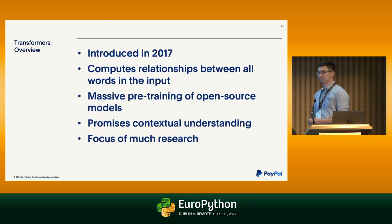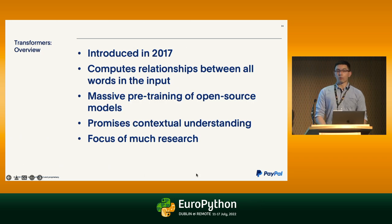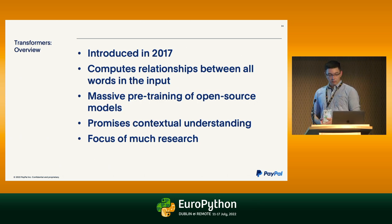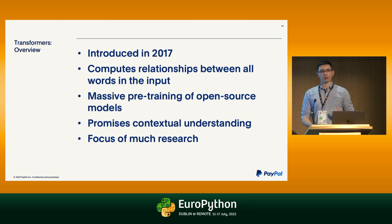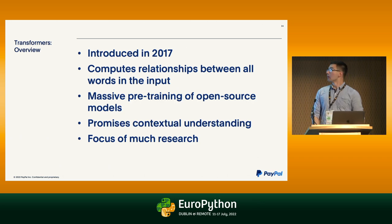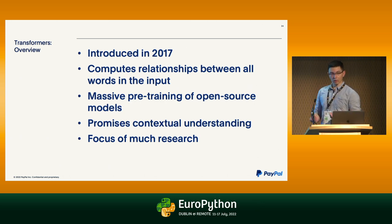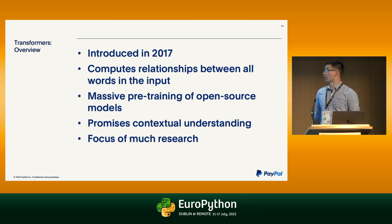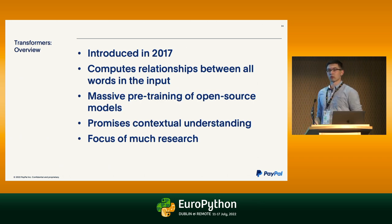Transformers can help — this is a big step from the simplest thing to one of the most complicated. They were introduced in 2017. The big idea is that we compute relationships between all the words in the input at once. As a result, they promise a deeper contextual understanding than many previous architectures. For the past couple of years they've been based on massive pre-training on open-source materials to get a good general understanding of language, followed by a fine-tuning stage specific to the task at hand. They've been the focus of a lot of research because they work really well on a huge variety of NLP tasks, from classification to question answering and so on.